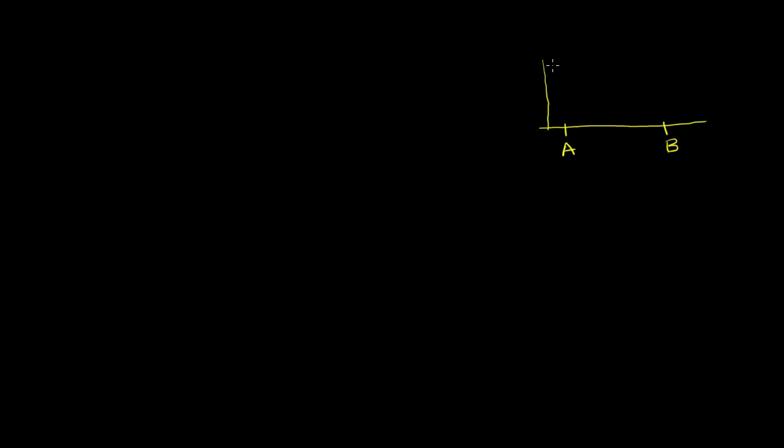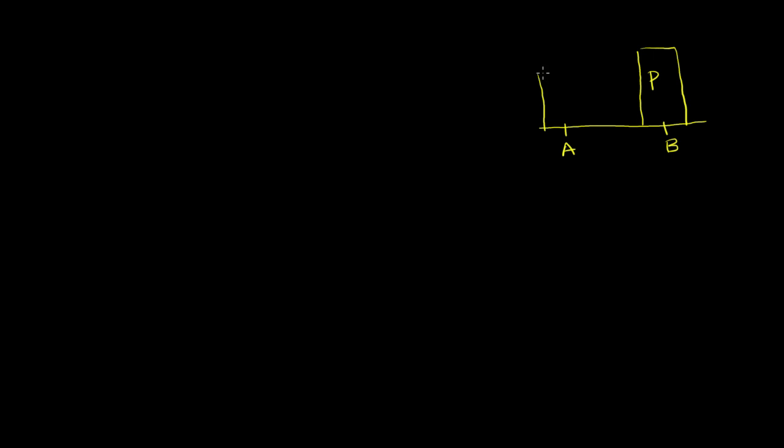So there's some percentage — some reality — that P percent will vote for B. And so P percent are going to vote for B, and the rest of the people are going to vote for A. So maybe 1 minus P percent are going to vote for A.